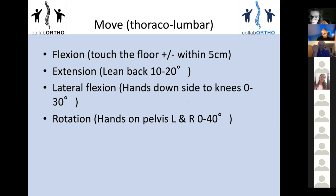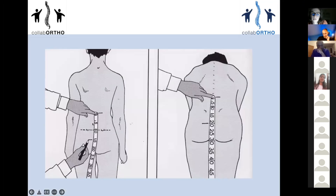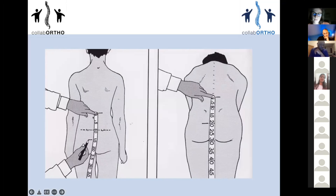For lumbar spine movements, the most important one is flexion, which feeds into Schober's test — a sign of ankylosing spondylitis. You identify the posterior superior iliac spines and draw a line, measure 10 cm above and 5 cm below while the patient stands upright. When they bend over, that distance should increase by at least 5 cm. This is a useful screening test for ankylosing spondylitis.